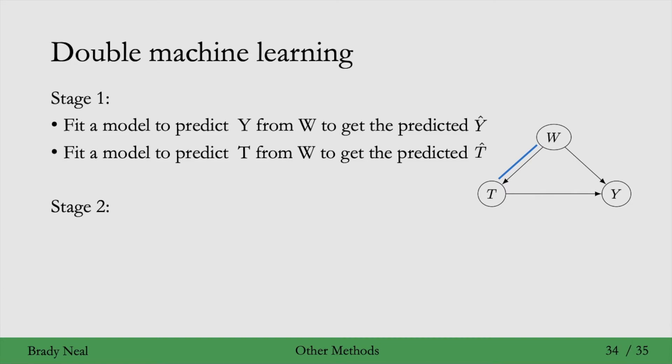Then in stage two, we use this Y-hat and this T-hat. So using those, we can partial out W by fitting a model to predict Y minus Y-hat from T minus T-hat. So the idea here is that by subtracting these values that were fitted to W, so that's the Y-hat and then T-hat was fitted to W, by subtracting those out, it's like we're subtracting out W. We're partialing out W, and that is how we remove the confounding that W introduces into the observational data.